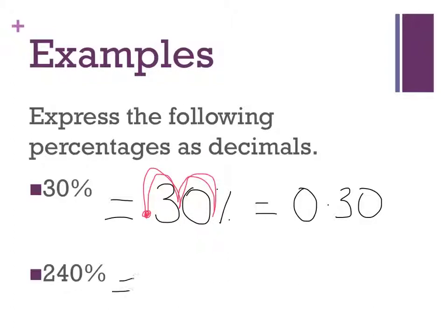Let's have a look at this one. 240%. 240%. This time my decimal point's here and I move one, two. So my answer becomes 2.40 or 2.4 either way. I've moved it two spots to the left.